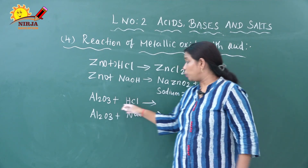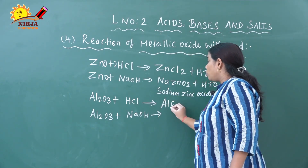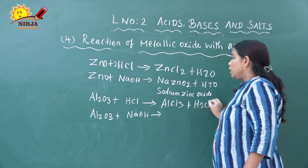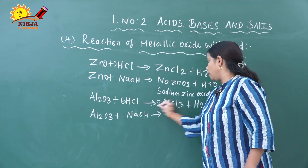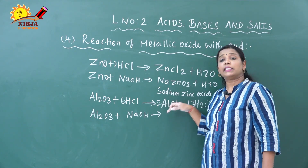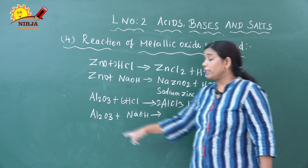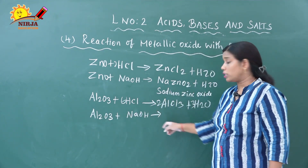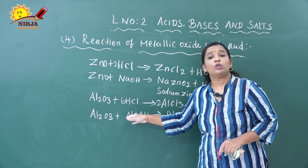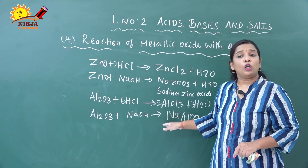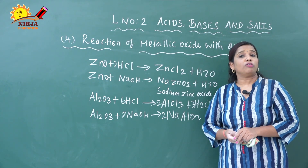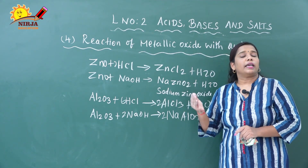Similarly, aluminum oxide (Al₂O₃) reacts with hydrochloric acid: Al₂O₃ reacts with 6HCl to produce 2AlCl₃ (aluminum chloride) plus water. And aluminum oxide reacts with sodium hydroxide to produce sodium aluminate (NaAlO₂). These are examples of amphoteric oxides. I hope you have understood the chemical properties of acid.